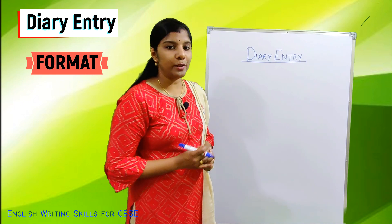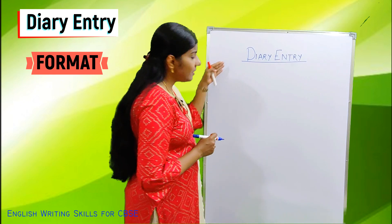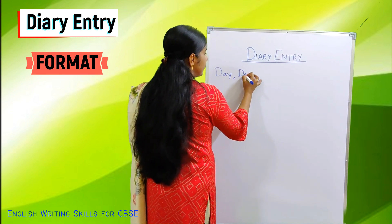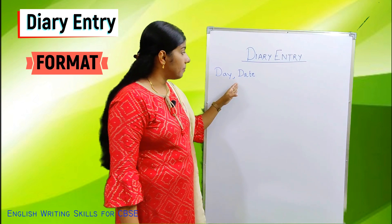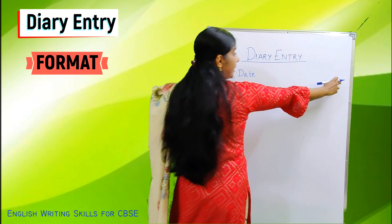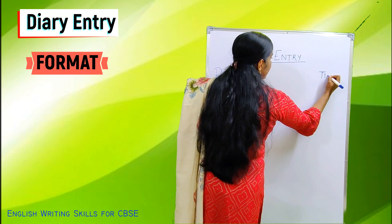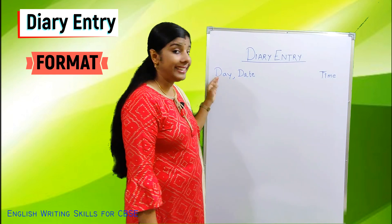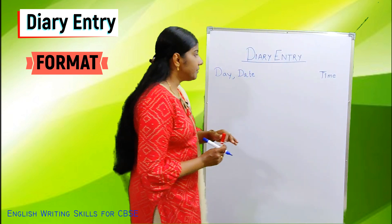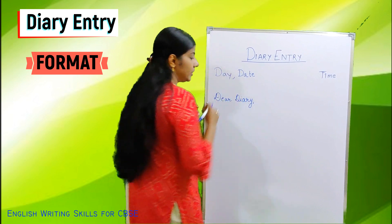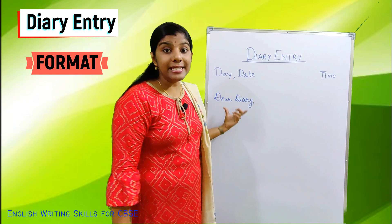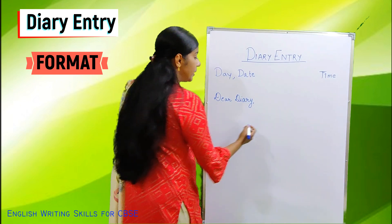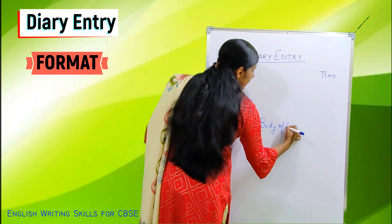After writing 'DIARY ENTRY', leave a line and then write the day and then the date. In the same line, on the right-hand corner, write the time. Then, after leaving another line, write 'Dear Diary' — as you are addressing and talking to your diary. Make sure the D in 'Dear' is capital and the D in 'Diary' is also capital, because here diary is treated as a name.